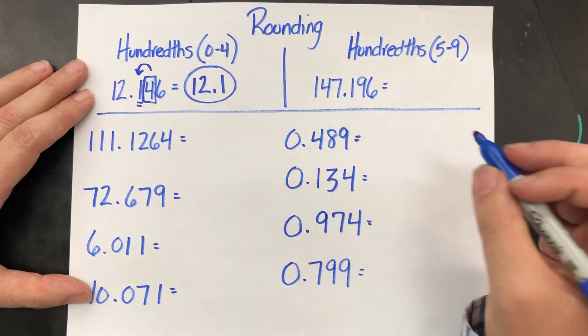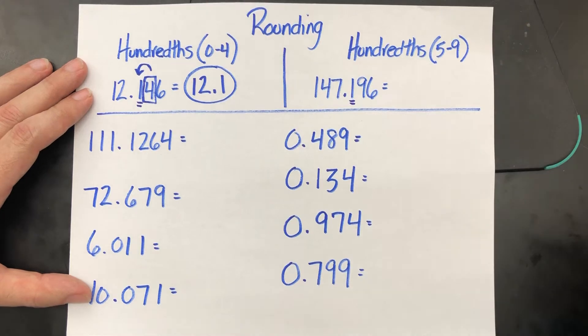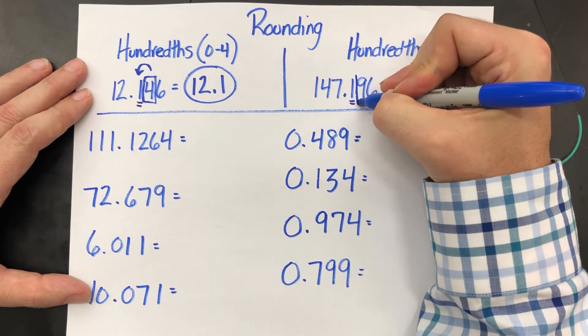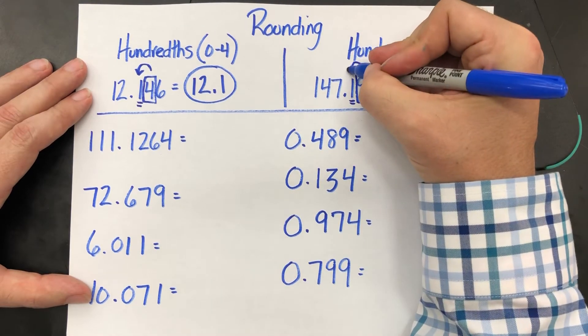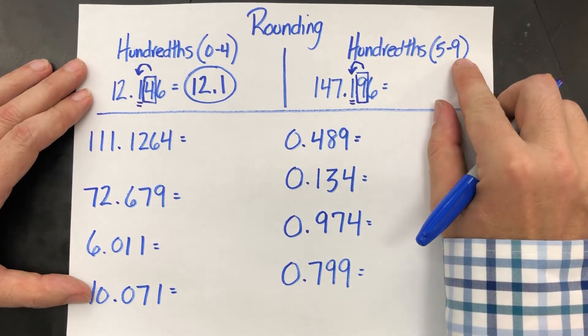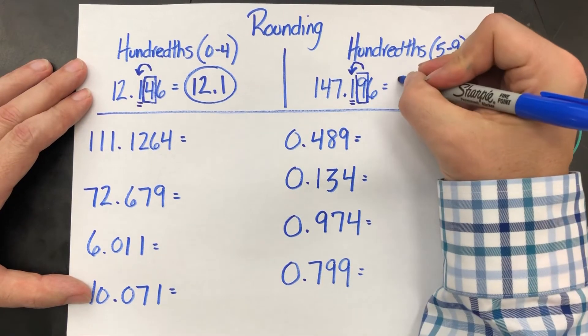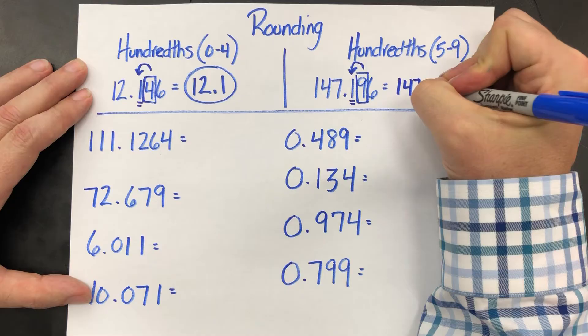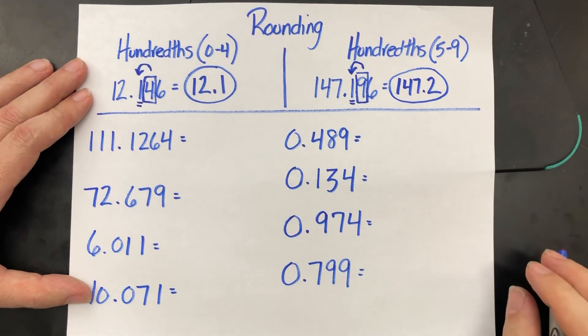One forty-seven point one nine six. I want to get to that tenth spot, one decimal place, but that second spot, that hundredth spot, that nine - if that value is between five and nine, that nine is going to make that one jump up to a two. One forty-seven point two would be my answer with that second example.